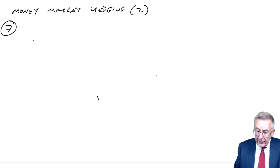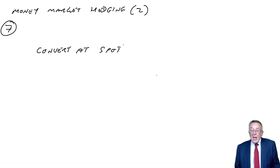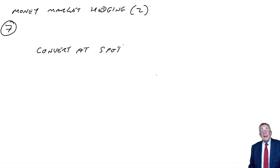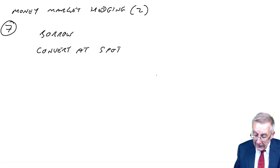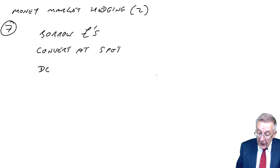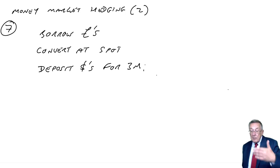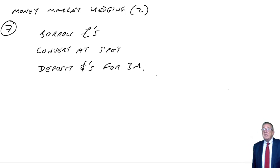Just like before, we want to convert at spot to avoid the exchange rate risk. In order to convert at spot, we want to buy dollars. So I'm going to need pounds to buy dollars — we're going to have to borrow pounds. We'll borrow some pounds, convert at spot so we'll have dollars, and then put the dollars on deposit for three months. Although that's what's going to happen — borrow pounds, convert at spot, deposit dollars — we're going to have to do the workings in reverse.